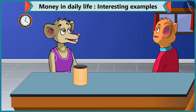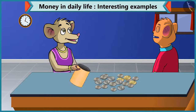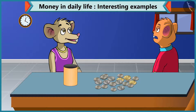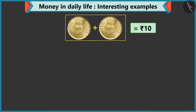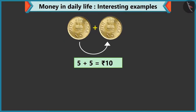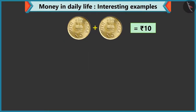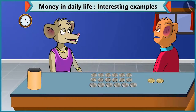Don't worry, Chichi. Do you have coins? Yes, I have many coins. Chichi, you can add different coins to make 10 rupees. How's that? Look, Chichi, adding 2 coins of 5 rupees makes 10. So you can also give me 2 coins of 5. Yes, adding 5 to 5 makes 10. You are right, Chichi.